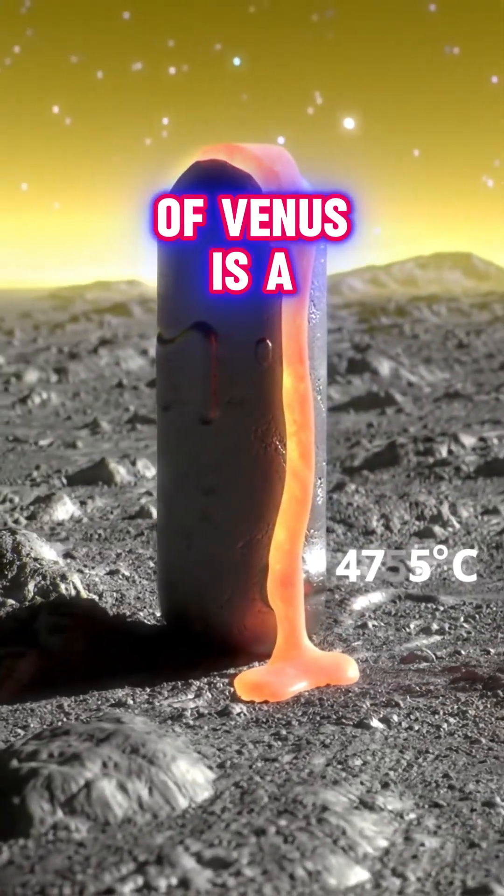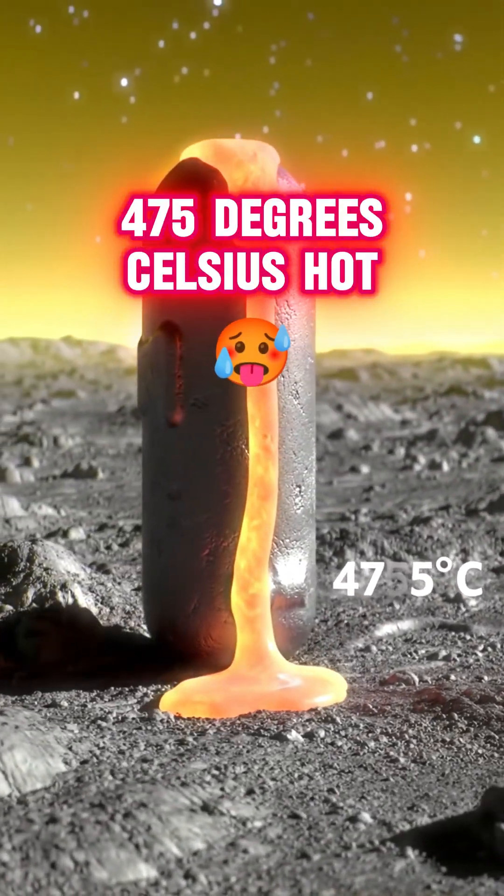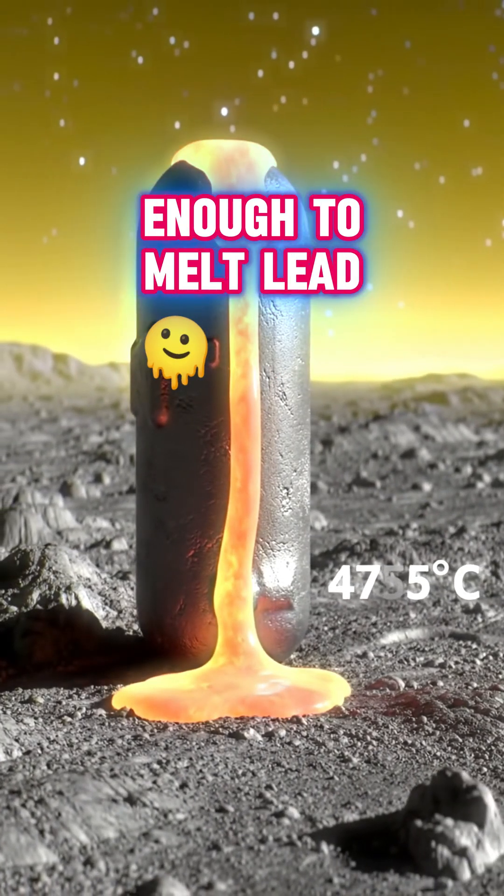Because the surface of Venus is a scorching 475 degrees Celsius, hot enough to melt lead.